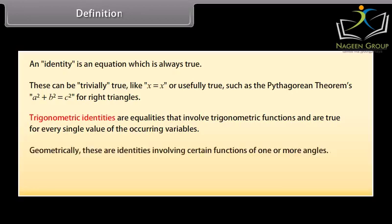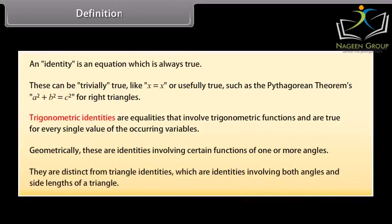Geometrically, these are identities involving certain functions of one or more angles. They are distinct from triangle identities, which are identities involving both angles and side lengths of a triangle.